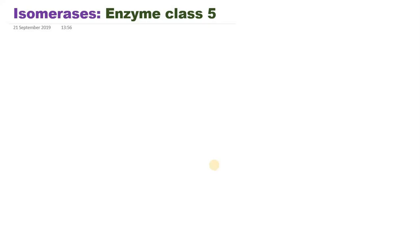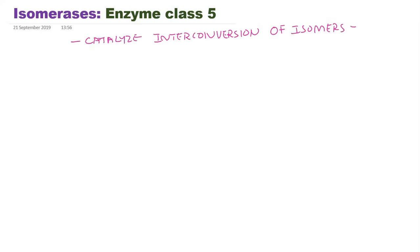Hello everyone. Today we are going to learn about the class 5 enzymes, that is isomerases. These isomerases catalyze interconversion of isomers. The isomers may be structural isomers or may be optical or geometric isomers. Isomers have the same molecular formula but differ with respect to their structure.